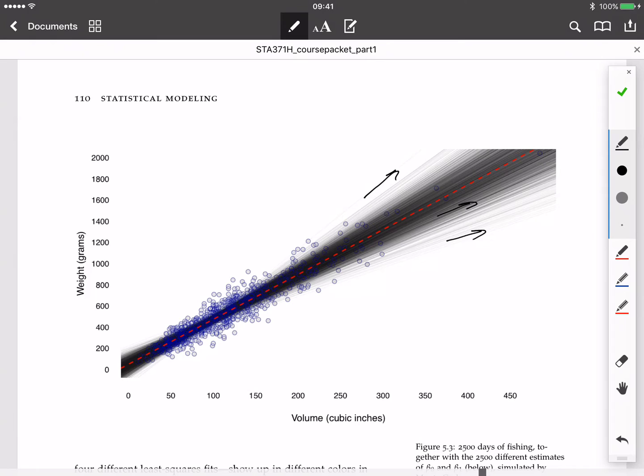Here's one, here's one, there's like a whole bunch in there, right? Every single one of those lines represents the least squares line that you fit to one particular sample of 15 fish on one particular day.